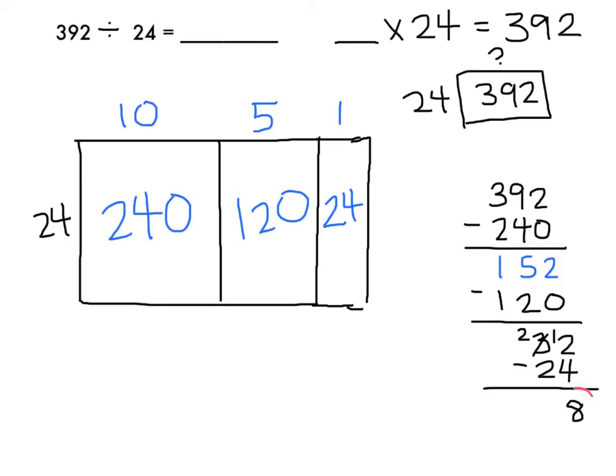Now, because this 8 is less than 24, I cannot get another group of 24. This means that this becomes my remainder, and what I'm going to do is add my remainder onto my array and label it as remainder 8, and my entire dimension here is going to be 10 plus 5 plus 1, which is a total of 16.